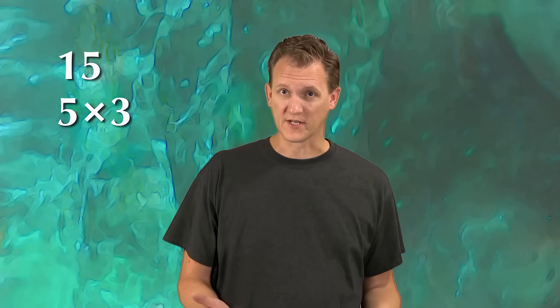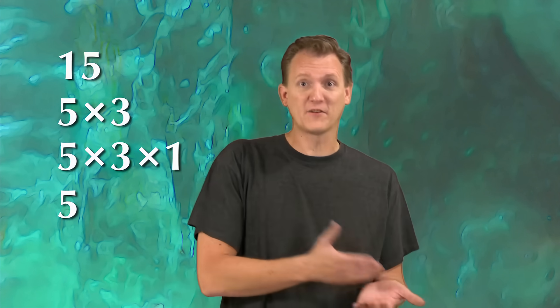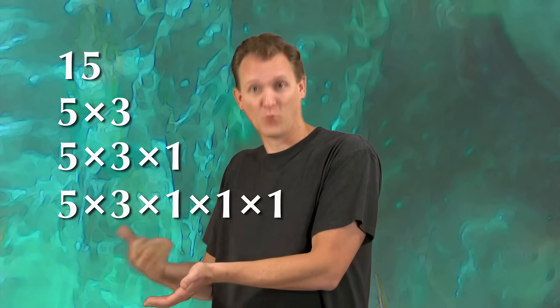For instance, if you're going to factor the number fifteen, you just say that it's five times three. But you could also say that it's five times three times one. In fact, you could even say it's five times three times one. See why there's always a one left over when you're canceling common factors?